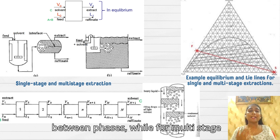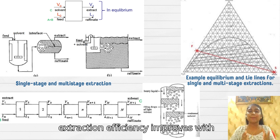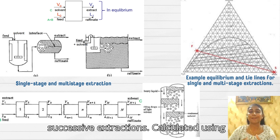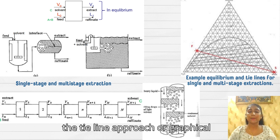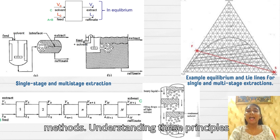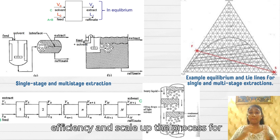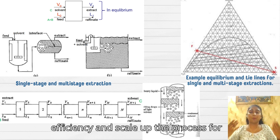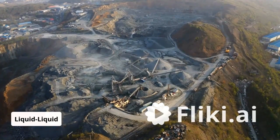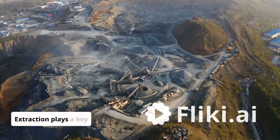For multi-stage extraction, efficiency improves with successive extractions, calculated using the tie-line approach or graphical methods. Understanding these principles allows engineers to optimize separation efficiency and scale up the process for industrial applications.